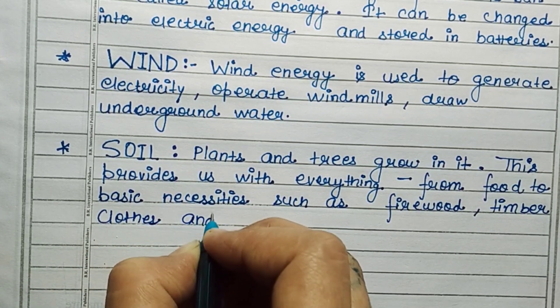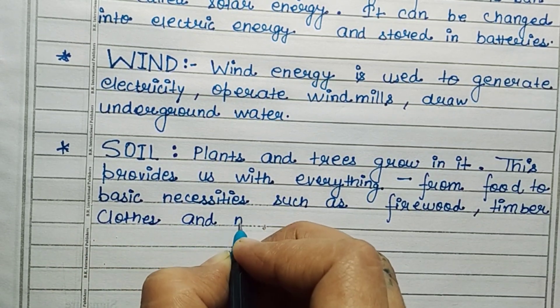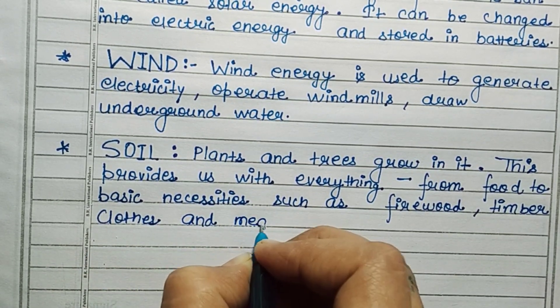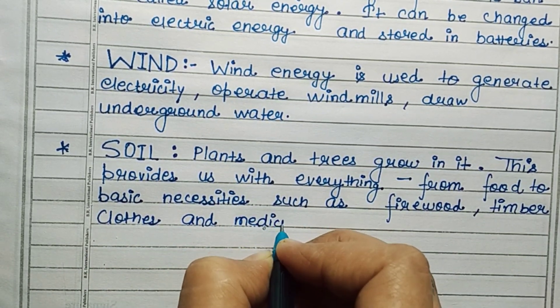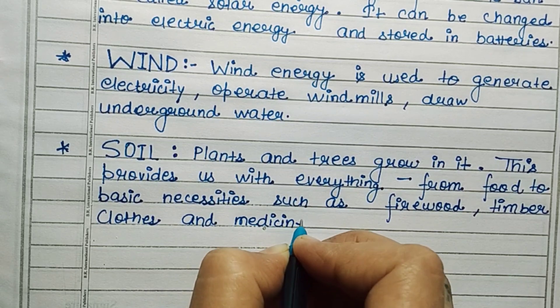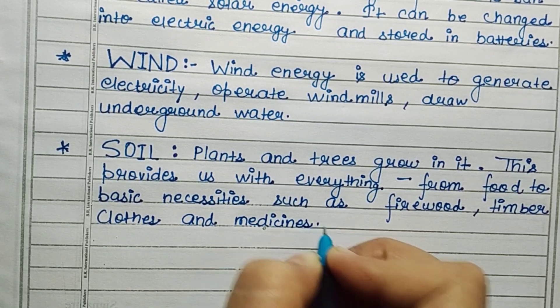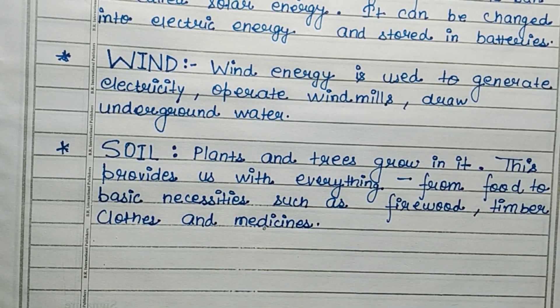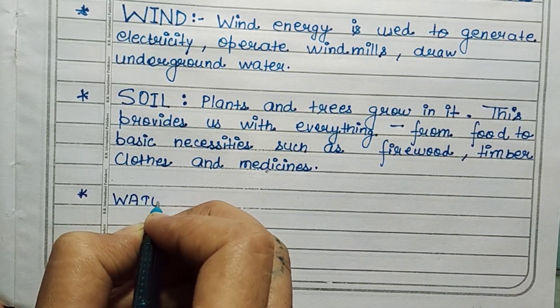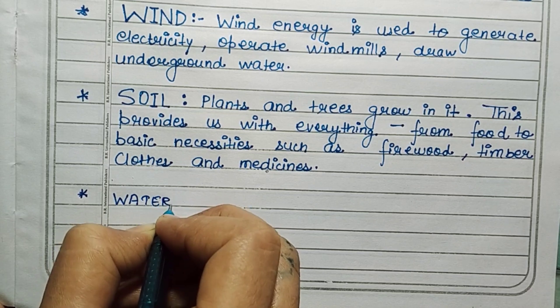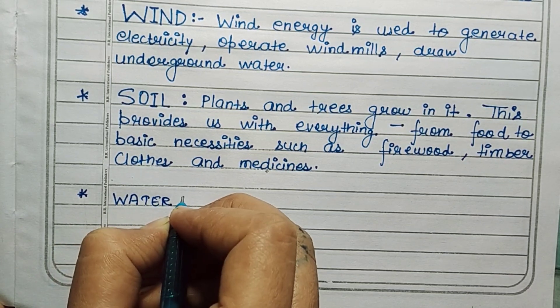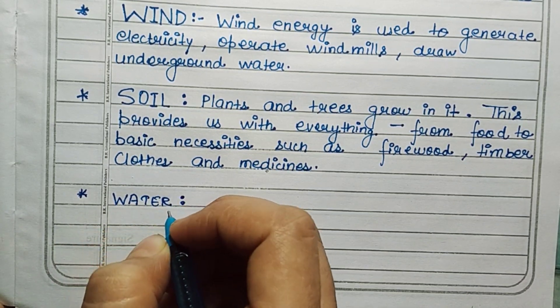Plants and trees grow in soil. This provides everything from food to basic necessities such as firewood, timber, clothes, and medicines.